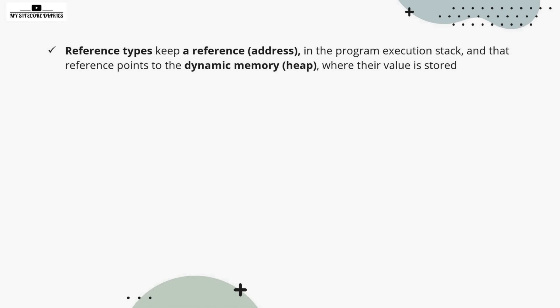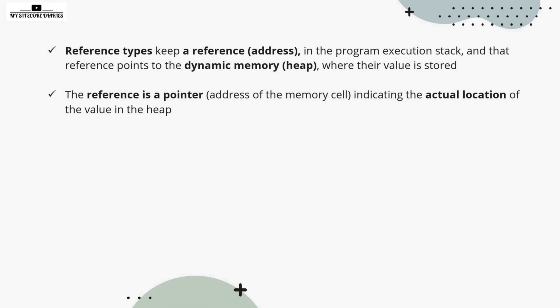So when you have a variable, your program execution stack will tell you the address where its value is stored in the heap. The reference is a pointer — an address of the memory cell indicating the actual location of the value in the heap. That reference or address tells you exactly where the value is stored.